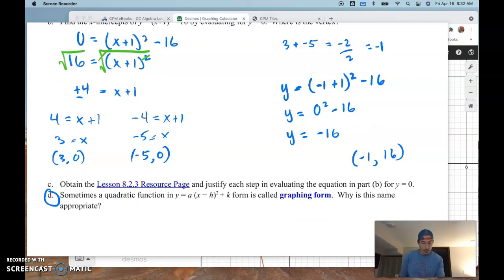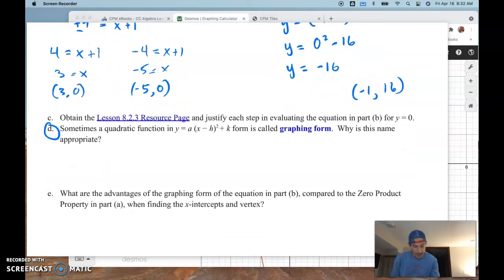And this particular form that we have is, and I'm checking out part D here, this is sometimes called graphing form, right? Because I can plot those 2x intercepts here at negative 5, 0, and 3, 0. I can go right in the middle down to negative 1, negative 16, way down here. And now, I could sketch that parabola.